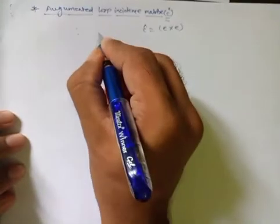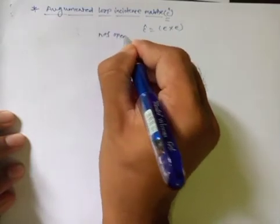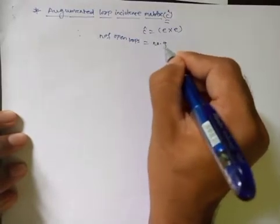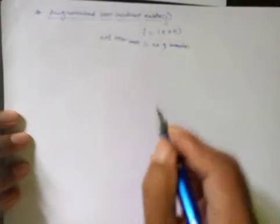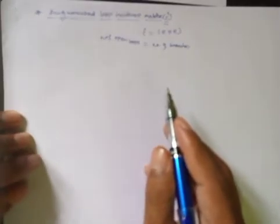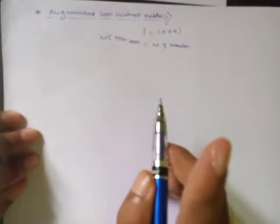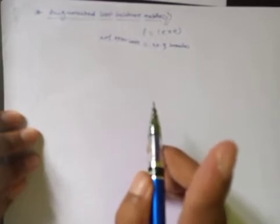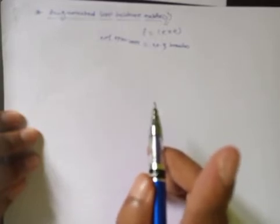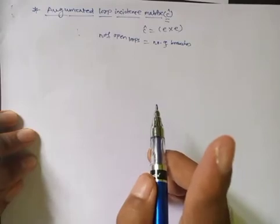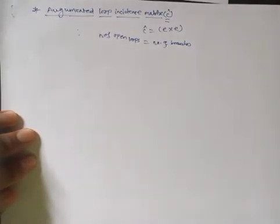The number of open loops or fictitious loops will be equal to the number of branches — that is, the branches of the tree, or the number of tree branches. One fictitious loop is formed by taking one branch at a time. The direction of that open or fictitious loop is decided by the direction of that branch itself.